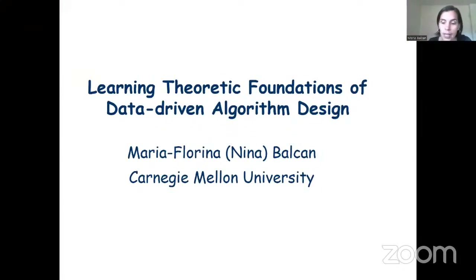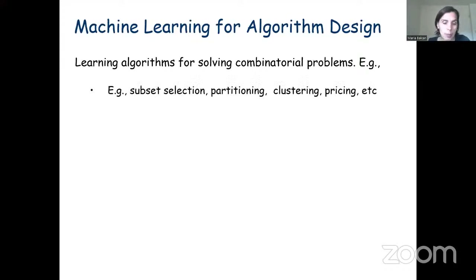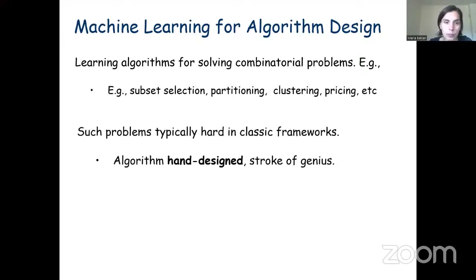Let me start with a high-level overview of the work on data-driven algorithm design for solving combinatorial problems. We think about learning algorithms for solving optimization problems that involve discrete or combinatorial structures, where the inputs or the outputs might be combinatorial — for example, the problem of clustering or organizing a set of items into natural groups, or the problem of pricing a given set of items in order to maximize revenue.